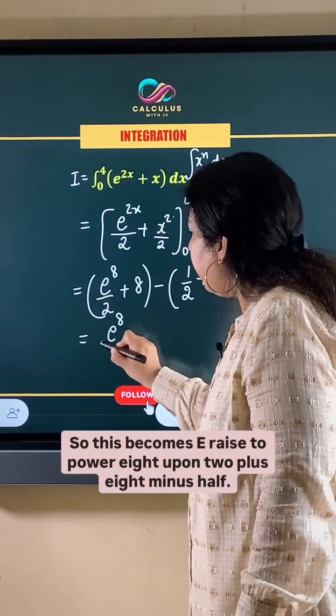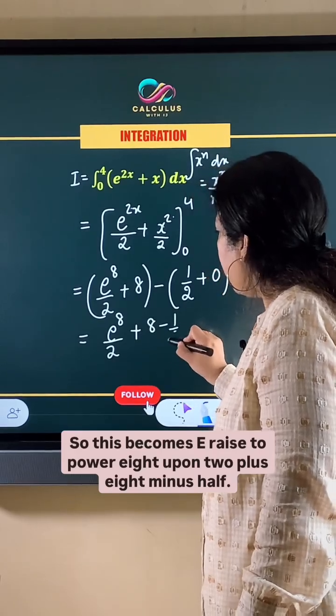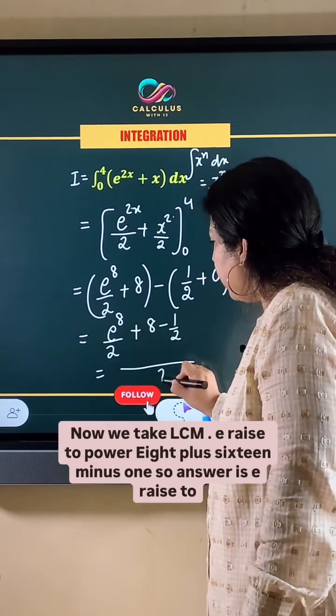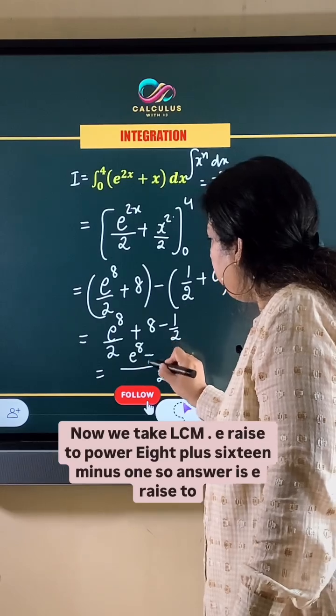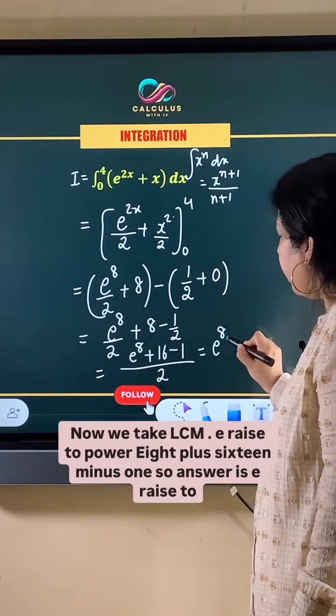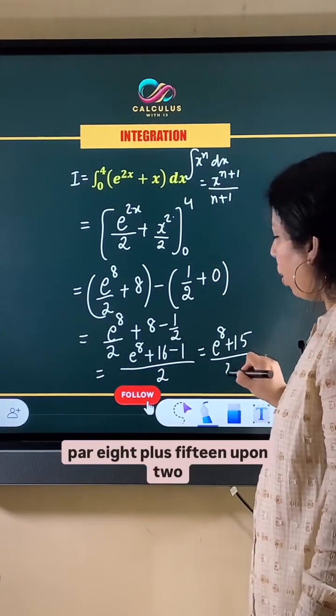So this becomes e raised to power 8 upon 2 plus 8 minus half. Now we take LCM. E raised to power 8 plus 16 minus 1. So the answer is e raised to power 8 plus 15 upon 2.